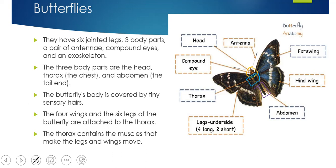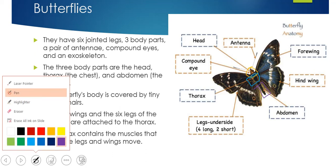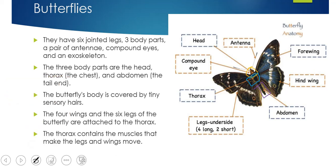The four wings and the six legs of the butterfly are attached to the thorax. Here is one wing and here is the other. These are called the forewings because they're at the front.